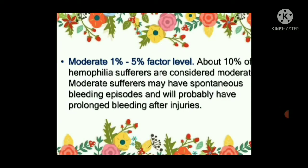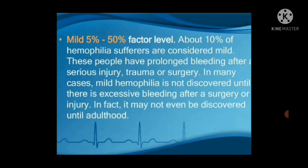Moderate hemophilia: about 10% of hemophilia sufferers are considered moderate. Moderate sufferers may have spontaneous bleeding episodes and will probably have prolonged bleeding after injuries. Mild hemophilia: about 10% of hemophilia sufferers are considered mild. These people have prolonged bleeding after serious injury, trauma, or surgery. In many cases, mild hemophilia is not discovered until there is a surgical procedure, as accessibility of diagnosis is not easy otherwise.